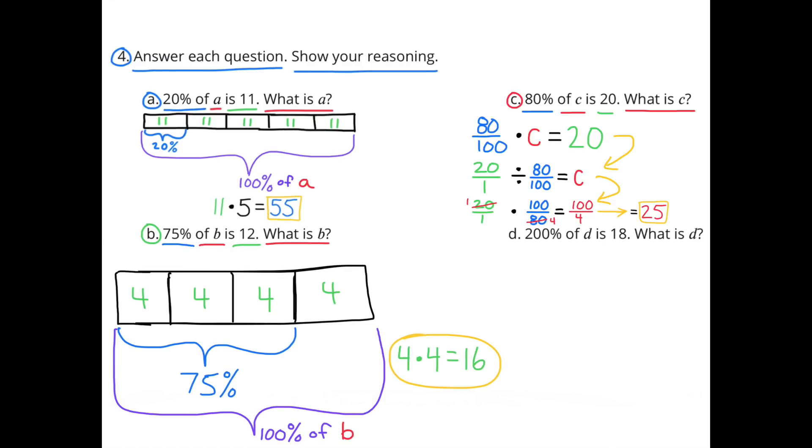Part C: 80% of C is 20. What is C? I'll do this one without drawing diagrams. I'm just going to translate it. 80% is the same as 80 out of 100, or 80 over 100. Of means times, and is means equals. So I can rewrite this as 80 over 100 times C equals 20. Now that I have it rewritten, I remember we're solving for C, so we have to get C by itself. 20 divided by 80 hundredths will equal C. Just like 80 hundredths times C equals 20, 20 divided by 80 hundredths will equal C. To do this division, we multiply by the reciprocal of 80 hundredths. So 20 times 100 eighths equals 100 fourths, or 100 divided by 4, which is 25. C is 25.